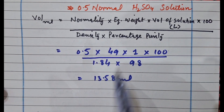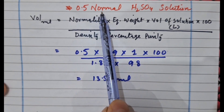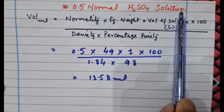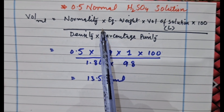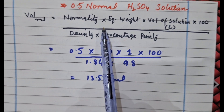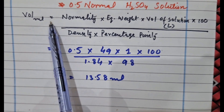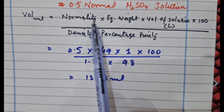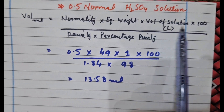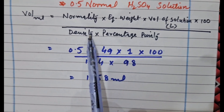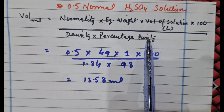Hi everyone, in today's tutorial I'm going to show you how to prepare 0.5 normal H₂SO₄ solution. Here is the expression that we normally use to prepare a normal solution: volume in ml is equal to normality into equivalent weight into volume of solution in liters into 100, divided by density into percentage purity of the substance.